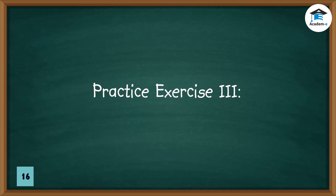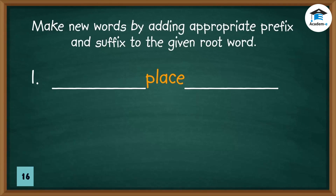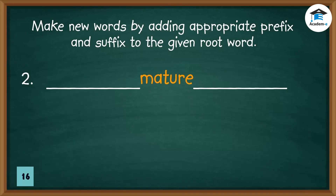Practice exercise three. Make new words by adding the appropriate prefix and suffix to the given root word. One: blank + 'place' + blank — answer: replacement. Two: blank + 'mature' + blank — answer: prematurely.